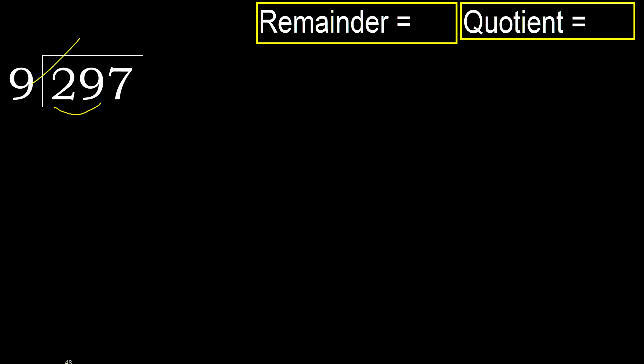9 multiplied by which number is nearest to 29 but not greater? 9 multiplied by 4 is greater, so multiplied by 3: 27 is not greater, ok. 29 minus 27 equals 2. Next, bring down 7.